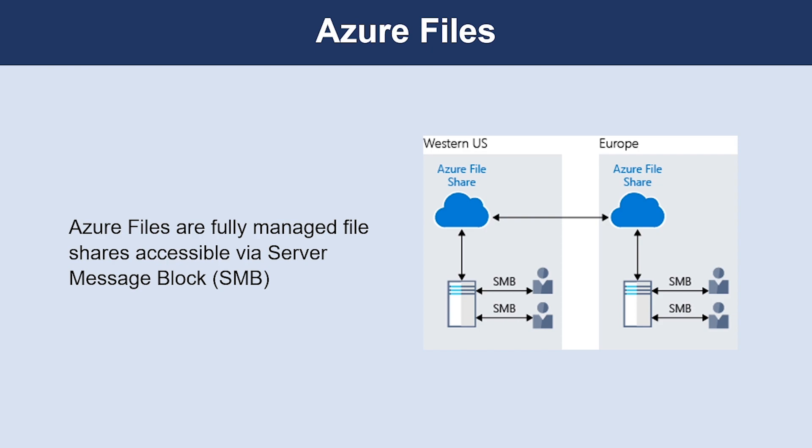The next service is Azure Files. Azure Files offers fully managed file shares in the cloud that are accessible via the industry-standard Server Message Block (SMB) protocol. Azure file shares can be mounted concurrently by cloud or on-premises deployments of Windows, Linux, and Mac operating systems. Applications running in Azure virtual machines or cloud services can mount a file storage share to access file data just as a desktop application would mount a typical SMB share.